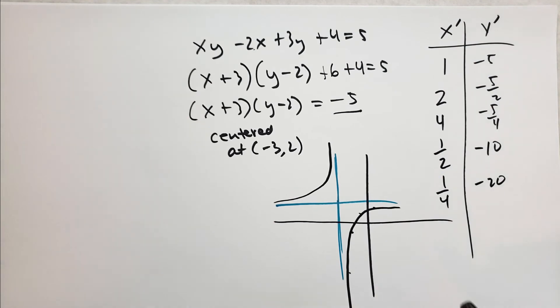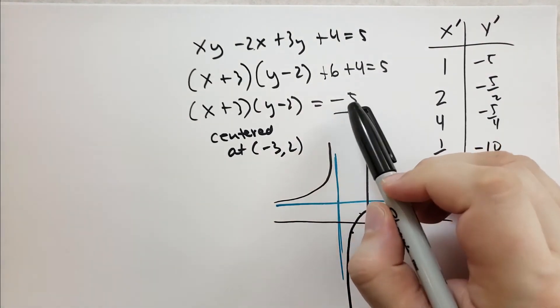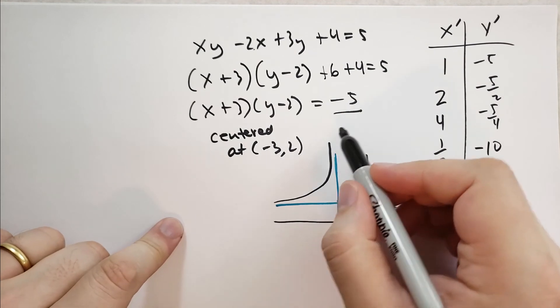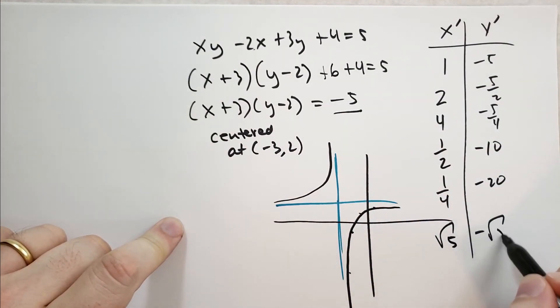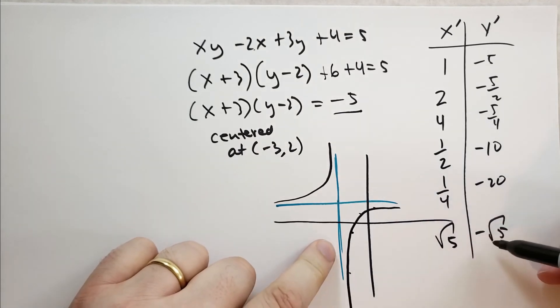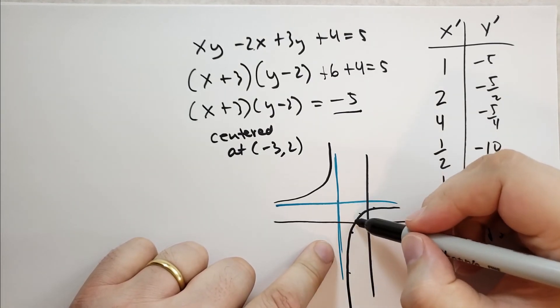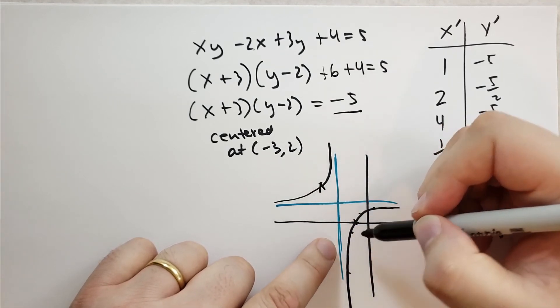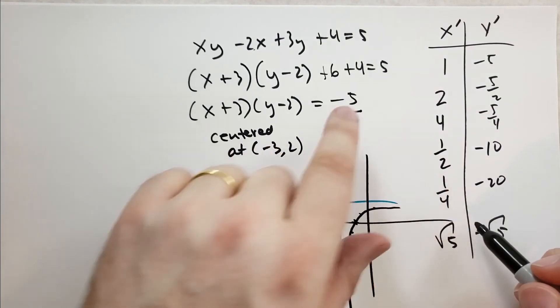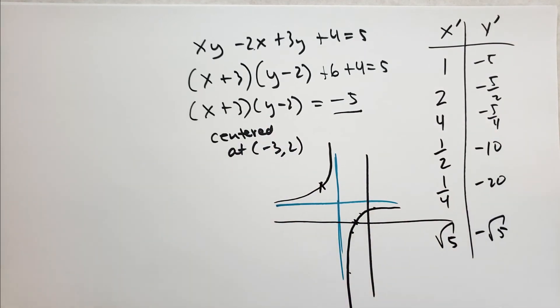Another way to think of this is that we have basically root of 5 and negative root of 5. So at that point, negative root of 5, root of 5, that's kind of the inflection point. That's the point where it gets closest to the origin. So you take the square root of that, that'll tell you how close it's supposed to be.